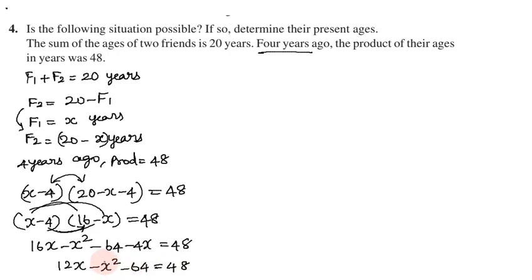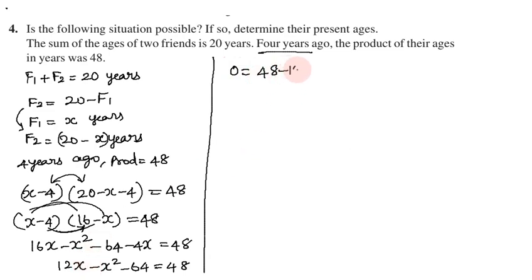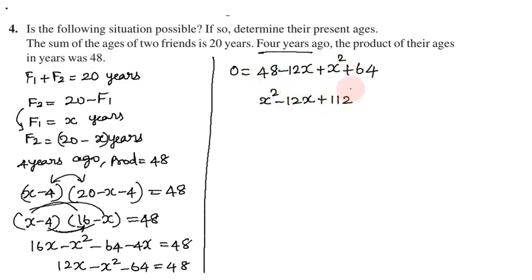Rearranging the equation: x squared minus 12x plus 64 plus 48 equals 0, so x squared minus 12x plus 112 equals 0. This is our quadratic equation.